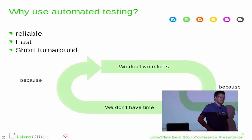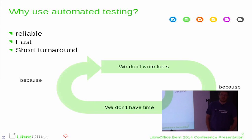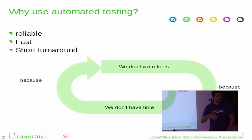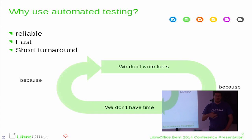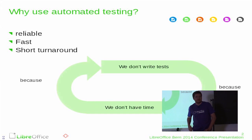So, why should we use automated testing? Automated testing is fast — it gives you a short turnaround to inform you if you've introduced a bug or not. The best would be already before you push, but even after you push it is quite quick. The Tinderbox will report it to you in normally less than an hour.